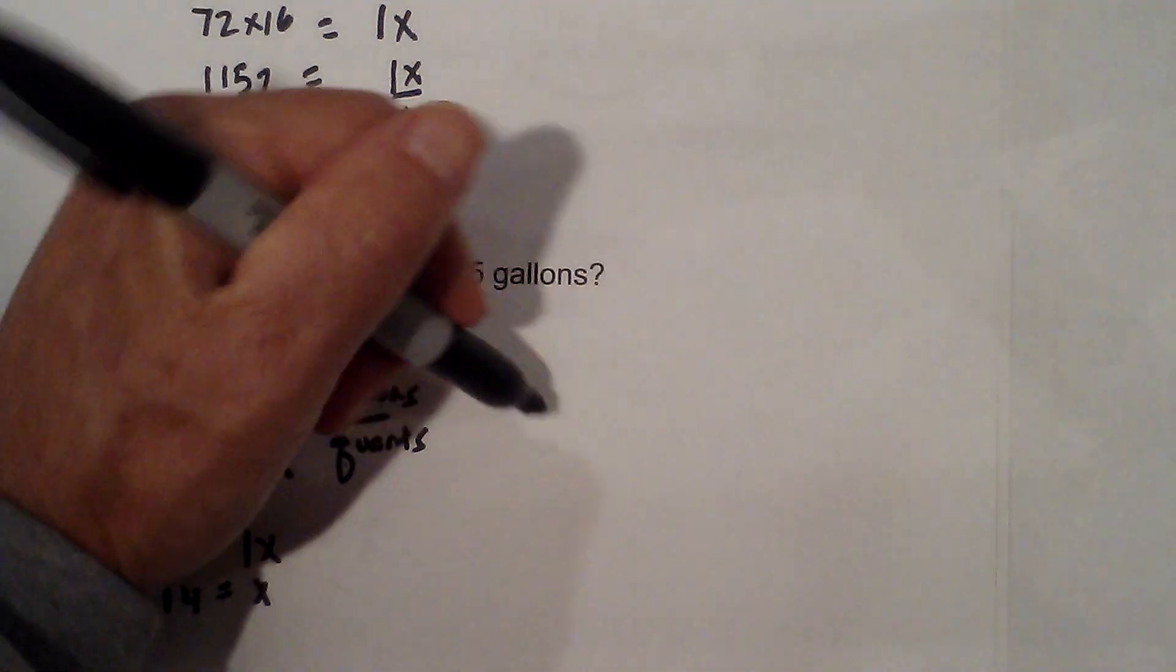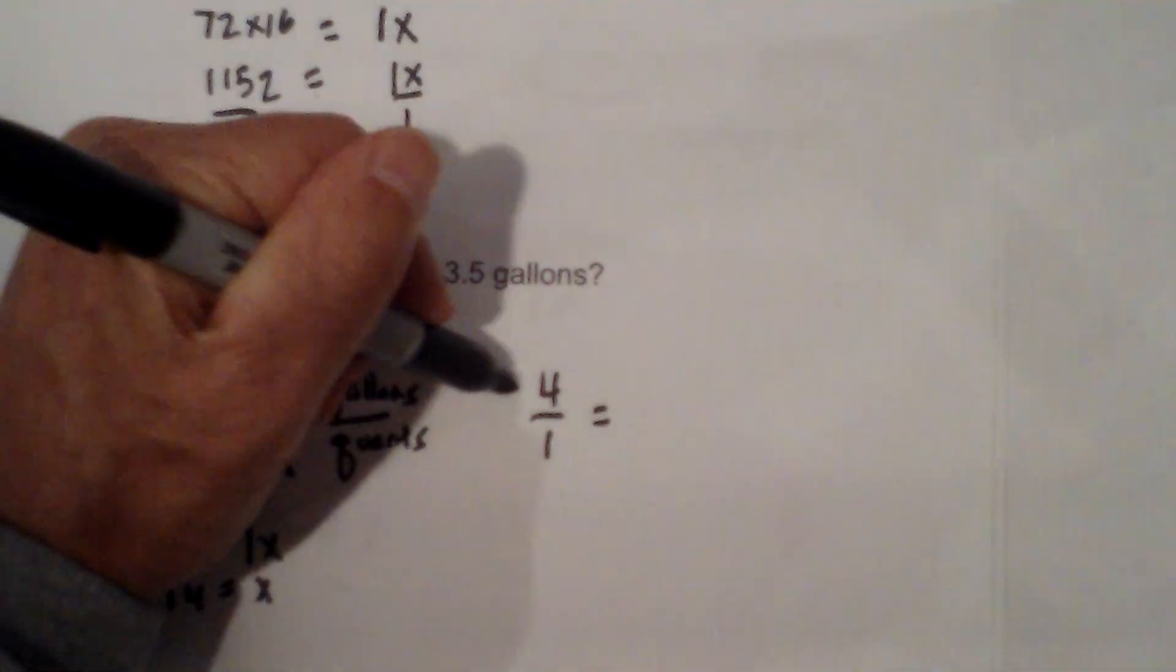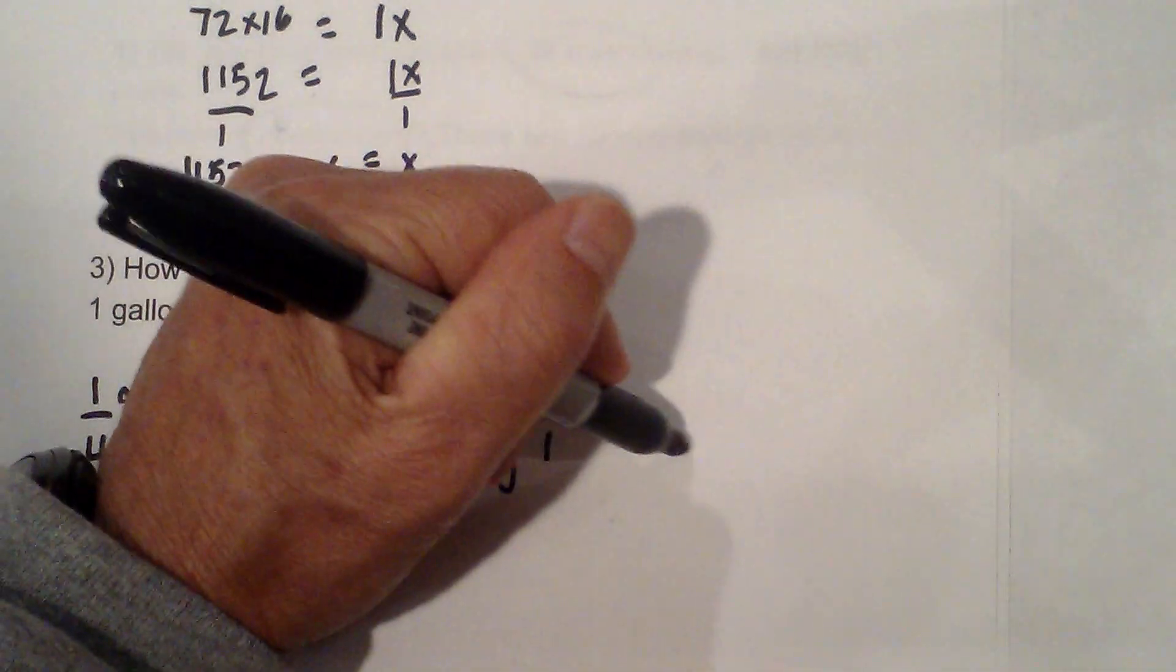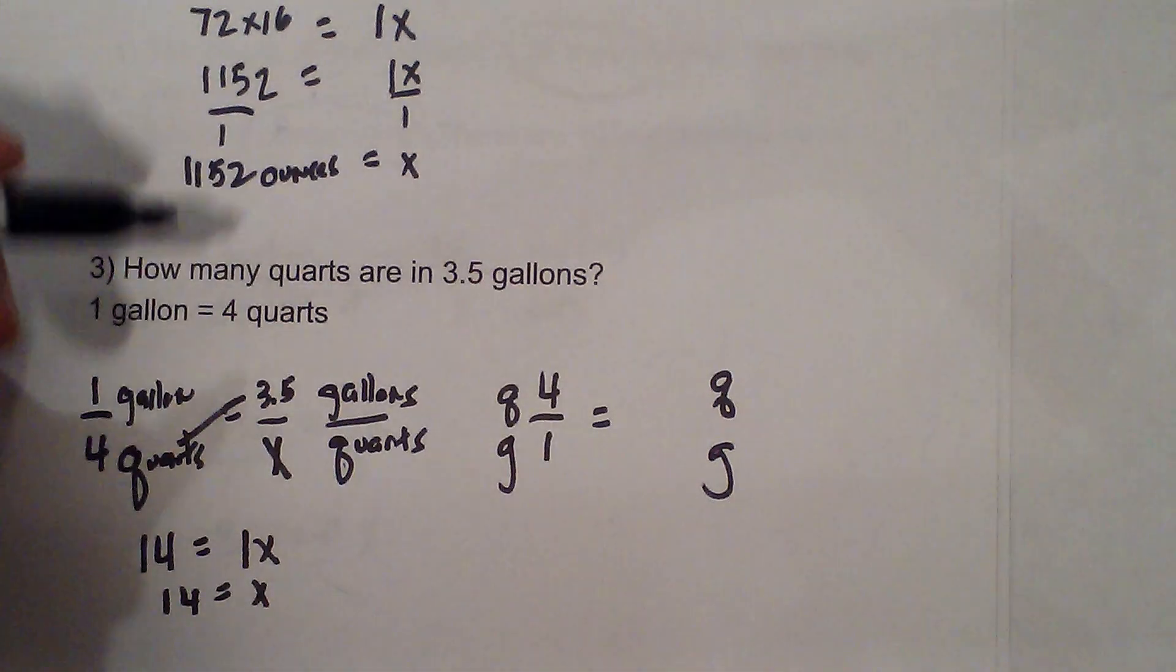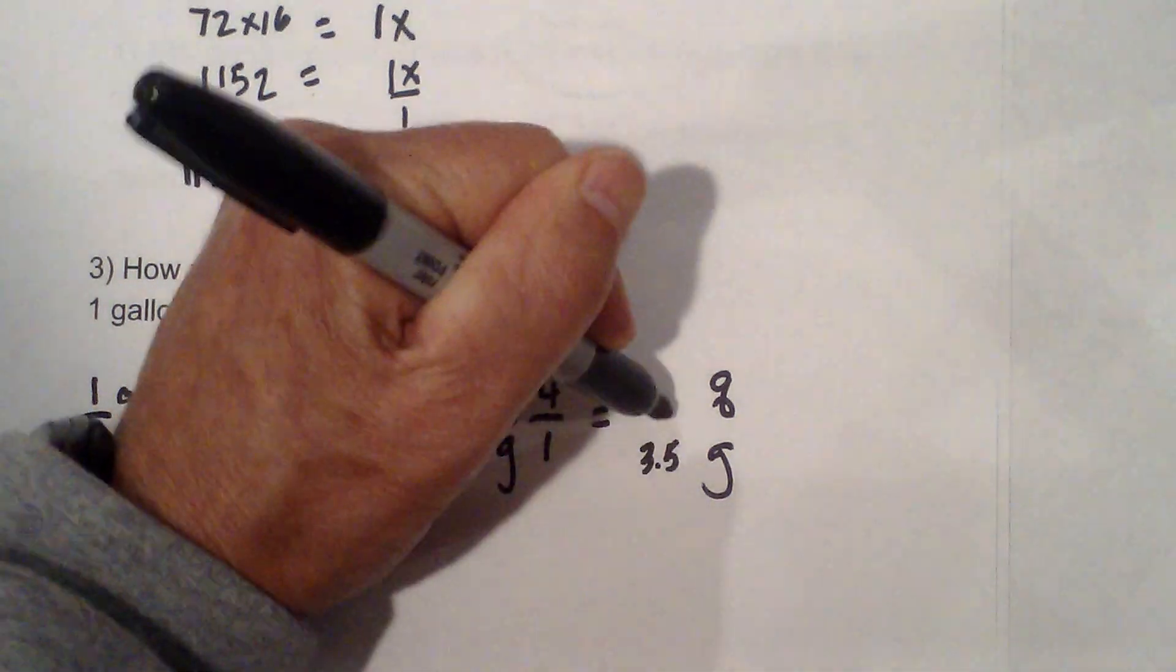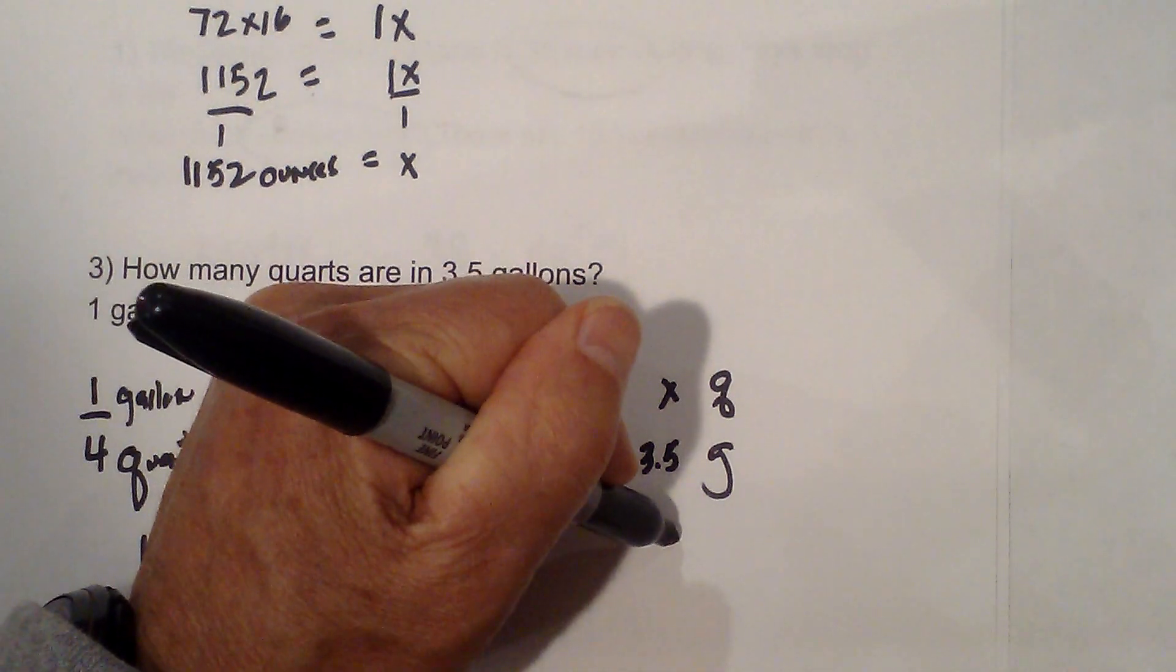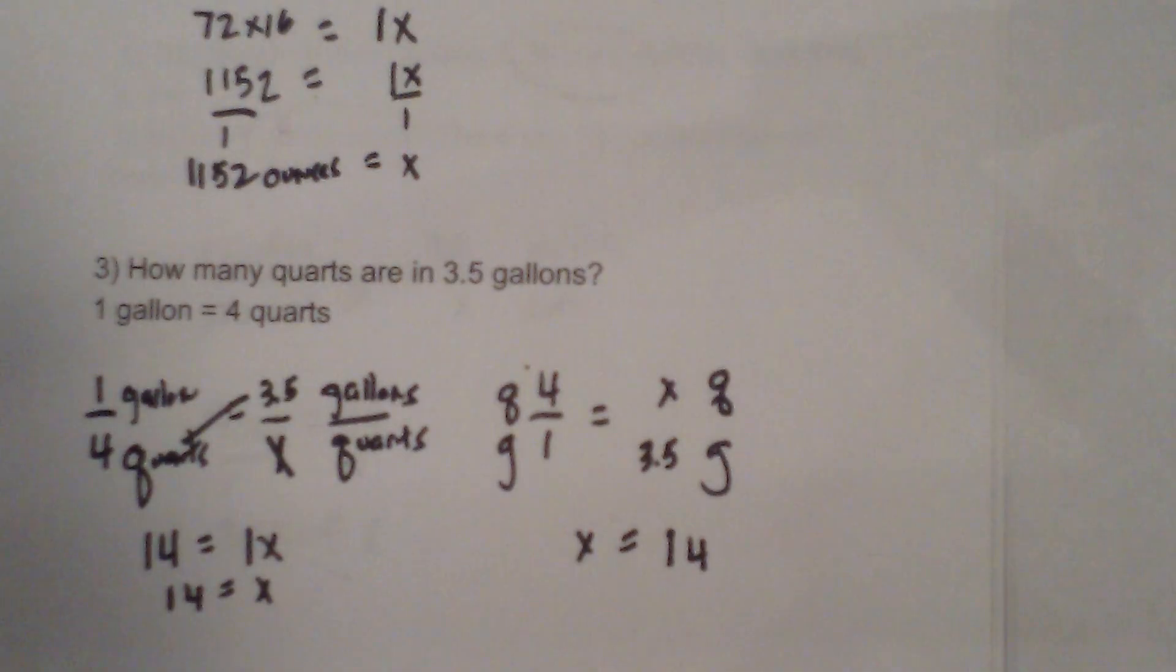Now if we set it up the other way, if we go 4 over 1 is equal to, so this would be quarts, this would be gallons. So now I would have gallons here, quarts there. And I then fill in the blank, I have gallons here, x here. 4 times 3.5 is 14. And then x is equal to 14.